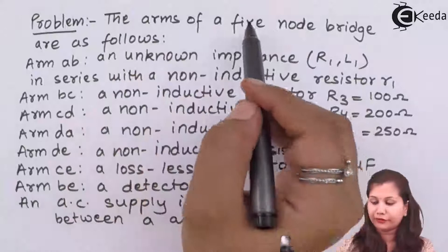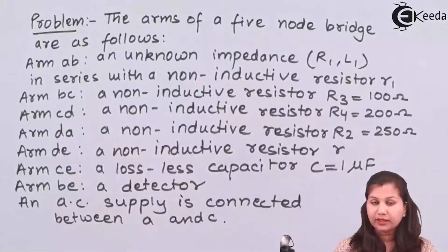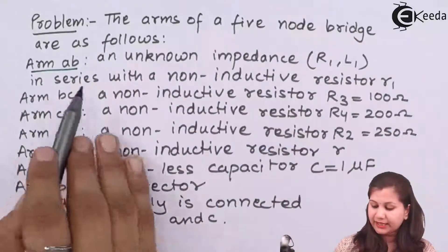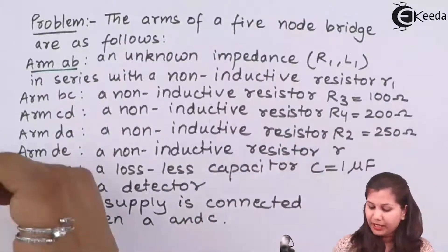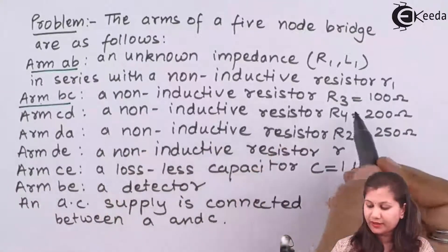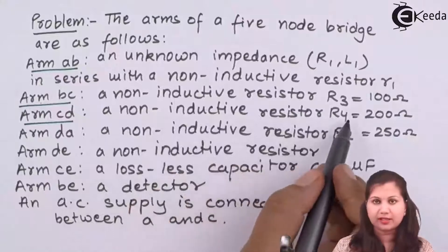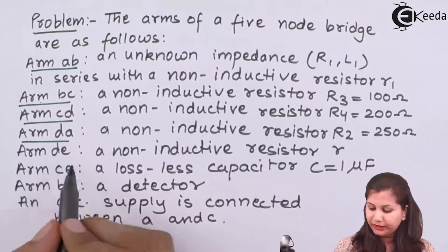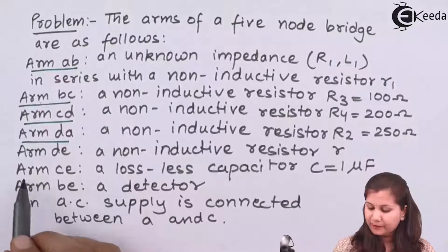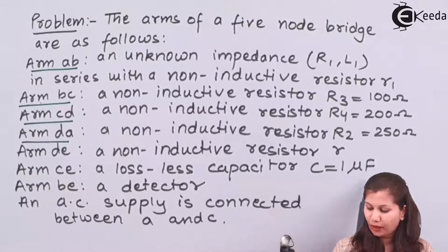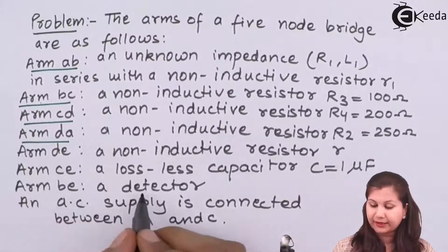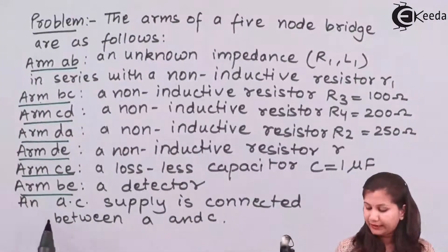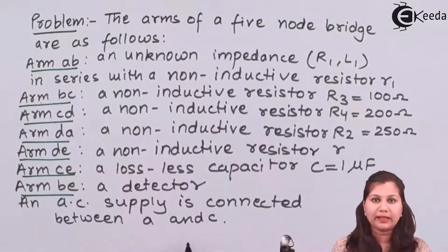We are given the arms of a 5-node bridge. Arm AB is an unknown impedance R1L1 connected in series with a non-inductive resistor small r1. Arm BC is a non-inductive resistor R3. Arm CD is a non-inductive resistor R4. Arm DA is a non-inductive resistor R2, 250 ohms. Arm DE is a non-inductive resistor R. Arm CE is a lossless capacitor C equals 1 microfarad, and BE is a detector. An AC supply is connected between points A and C.